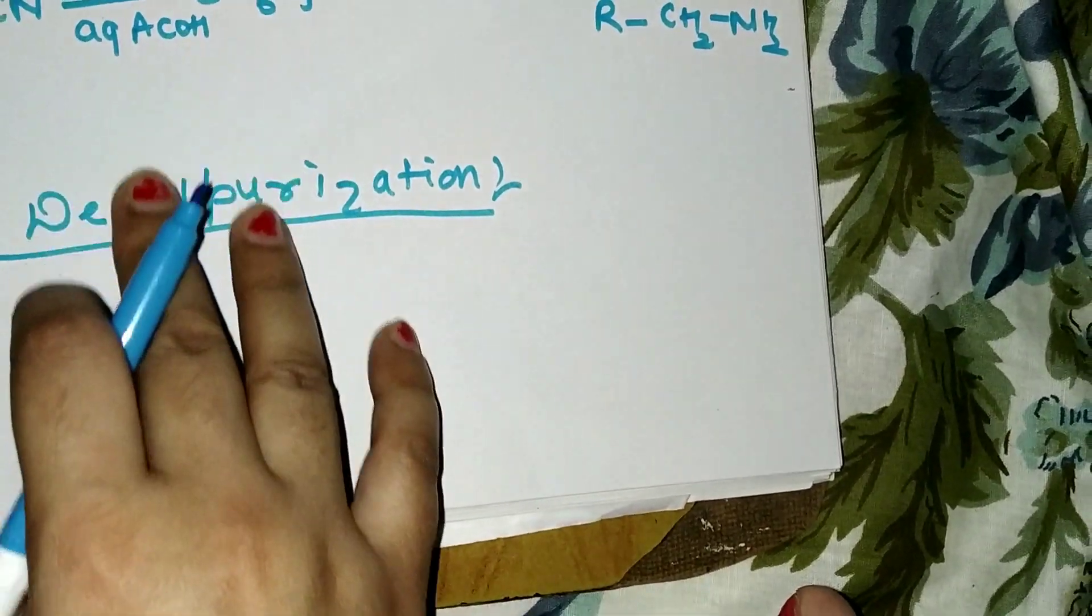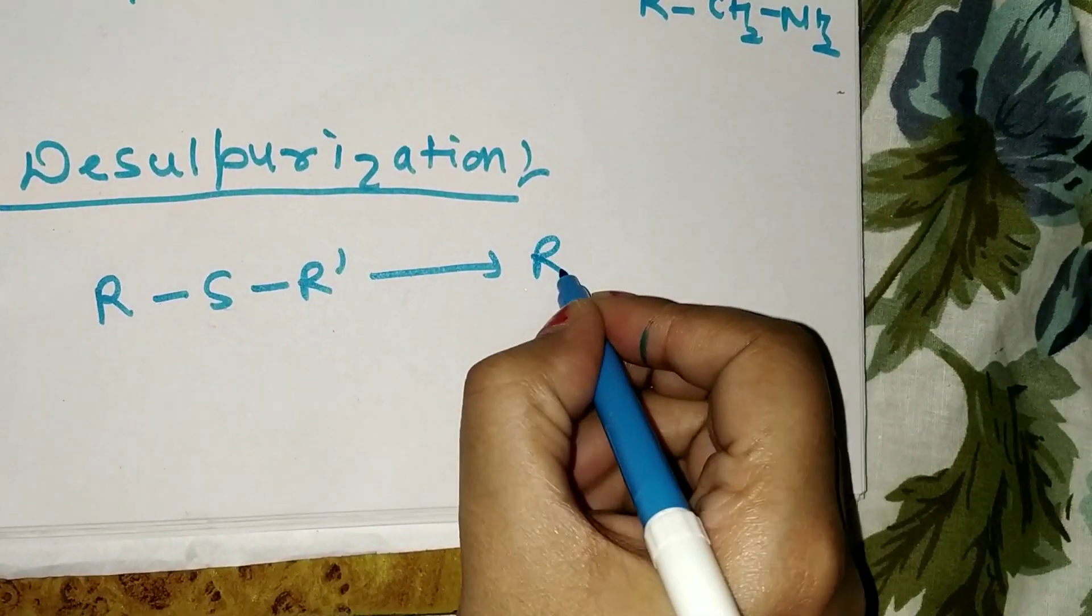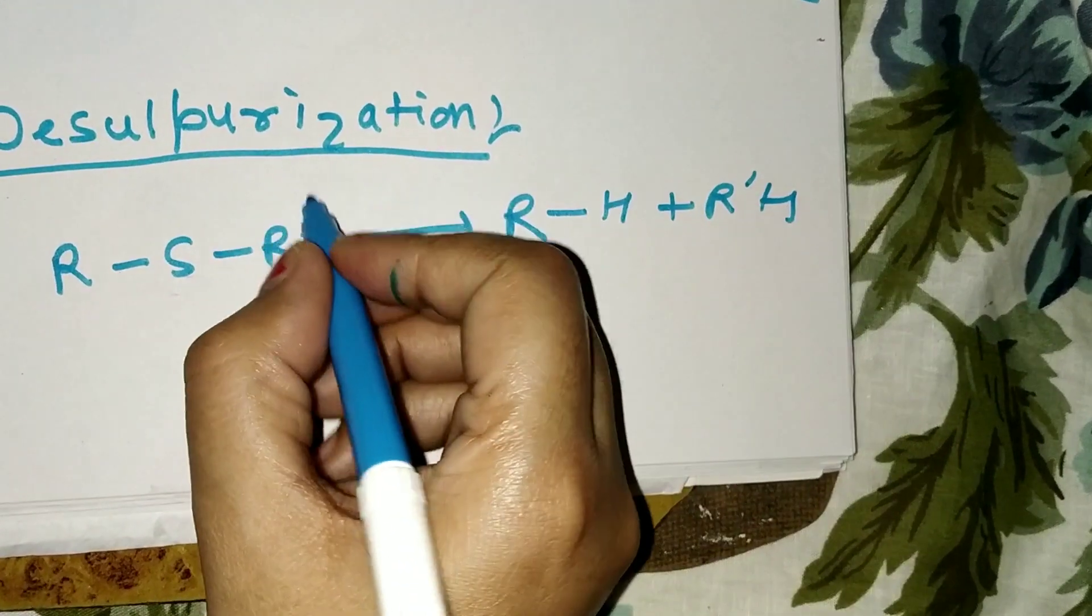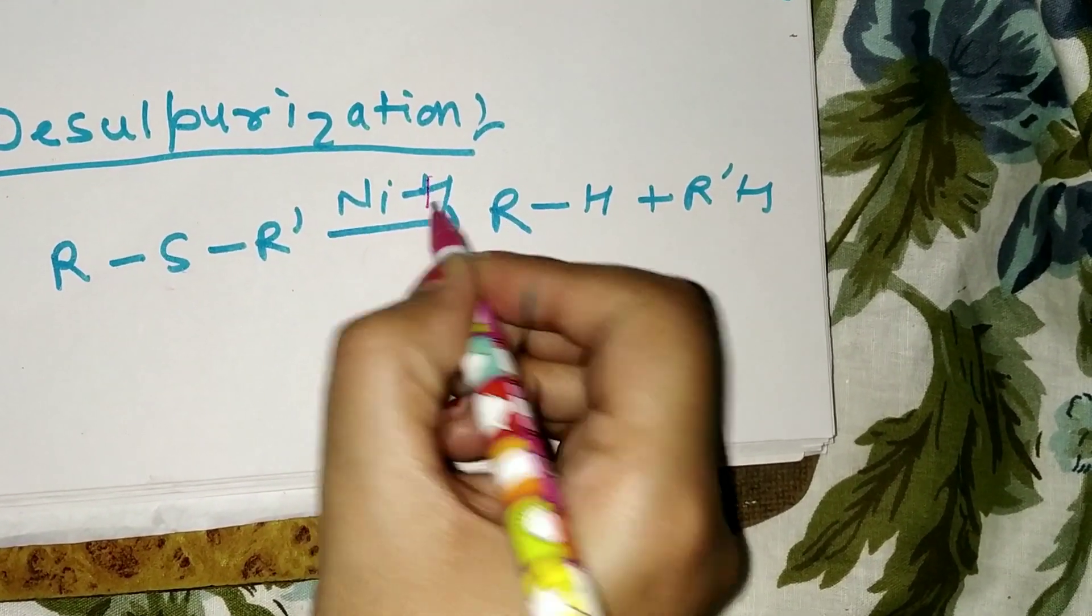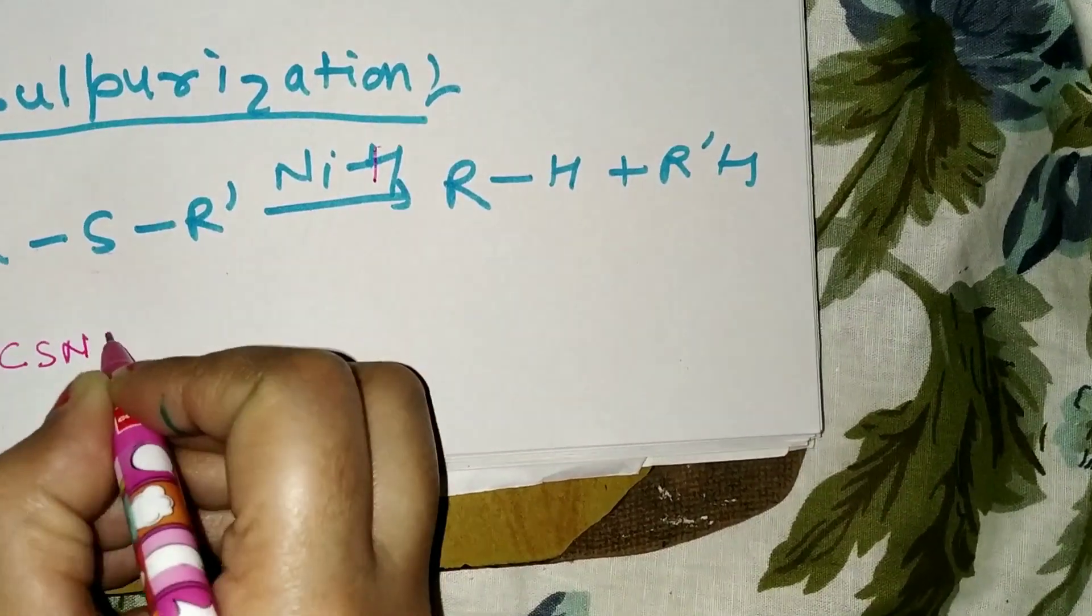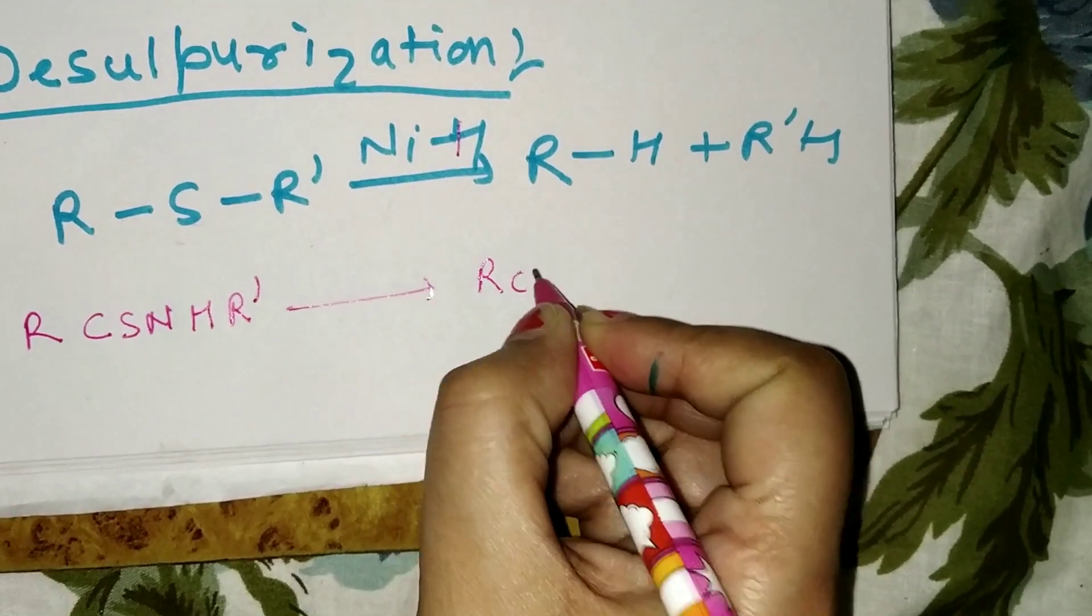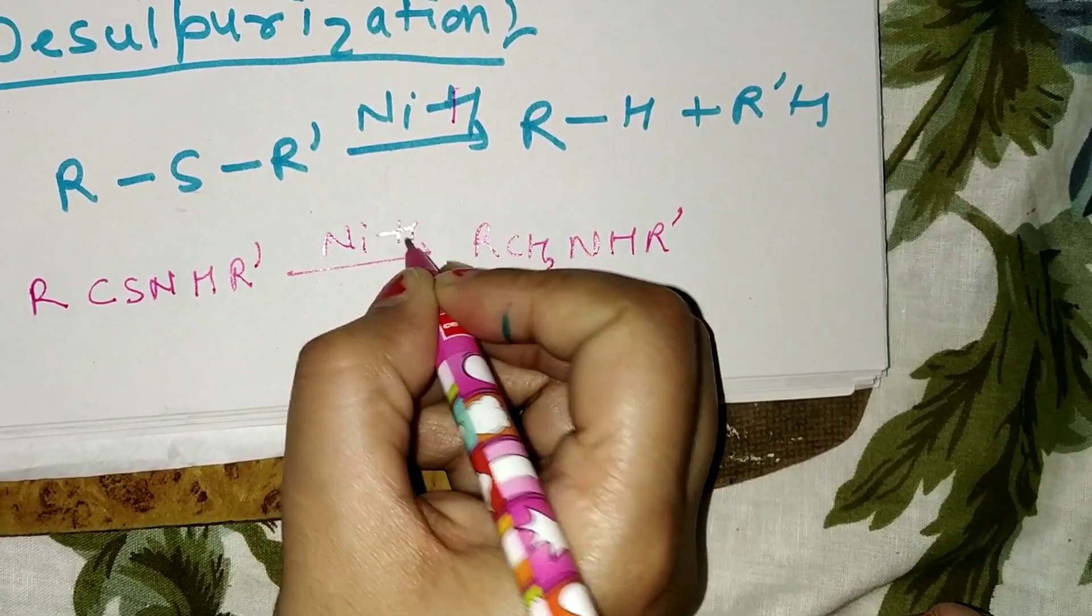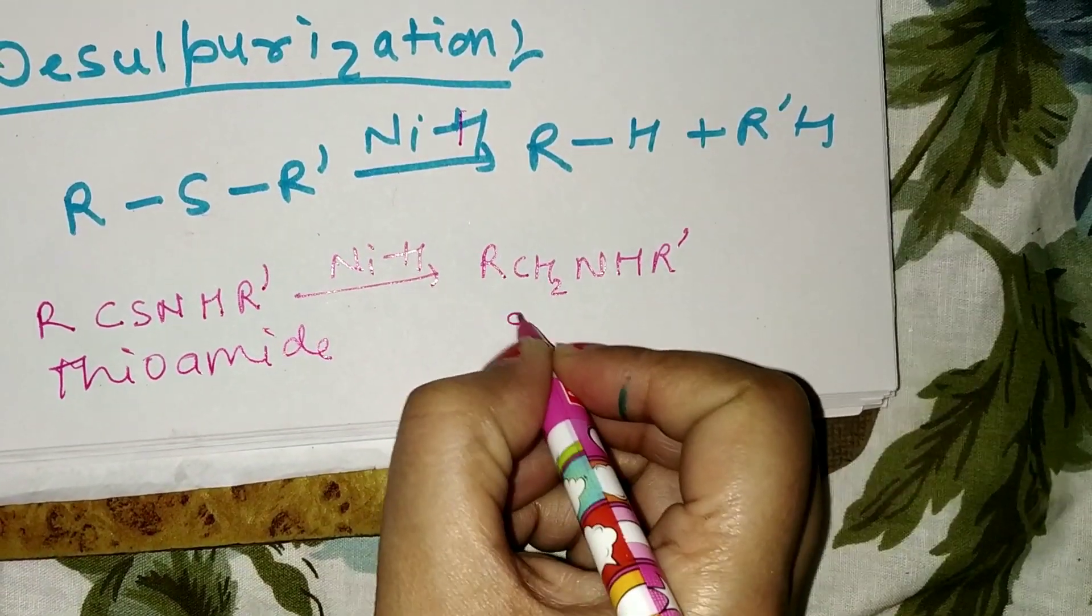For example, thio ether changes into alkane in the presence of Raney nickel. Thio amide also changes into amine. This is thio amide, this is secondary amine.